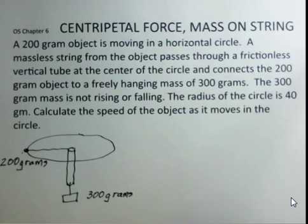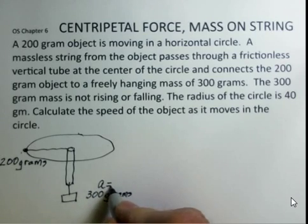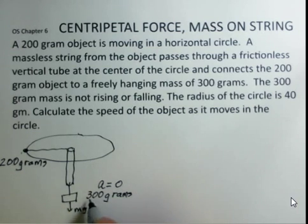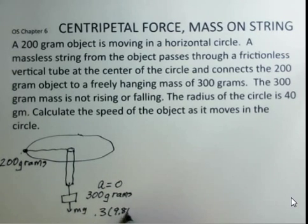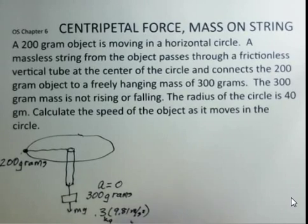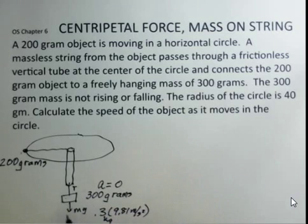Working with a couple of masses here, this 300 gram object has an acceleration of zero. It's not moving up, it's not moving down. That tells us that the mg downward, 0.3 kilograms times 9.81 meters per second squared, that force downward is balanced by the tension in the string.